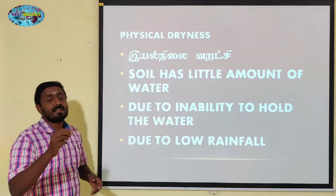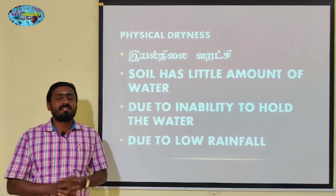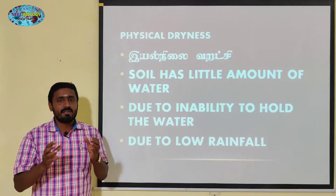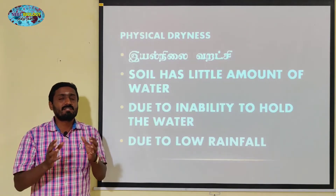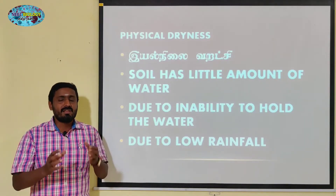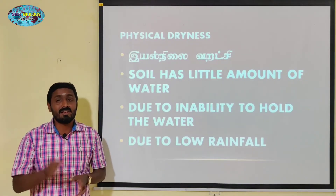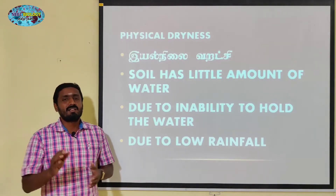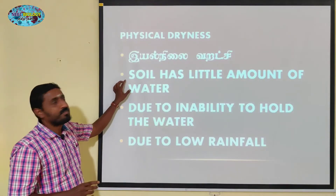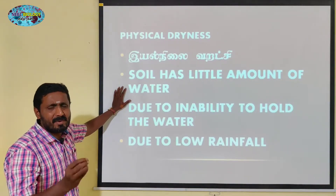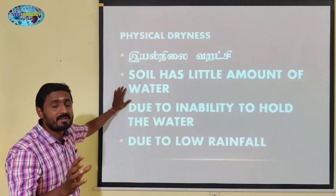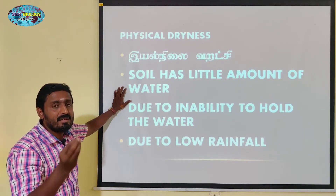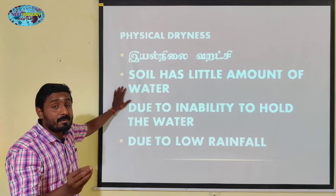Physical dryness means dryness of the environment — the soil does not have water at all. Even if it is raining, the rain water will not be sustained on the soil level. In between the soil particles, water molecules should be stored — that is called the water holding capacity of the soil. In physical dryness, the soil has little amount of water, but that water content is not sufficient for the plant, so the plant needs adaptations to overcome this.